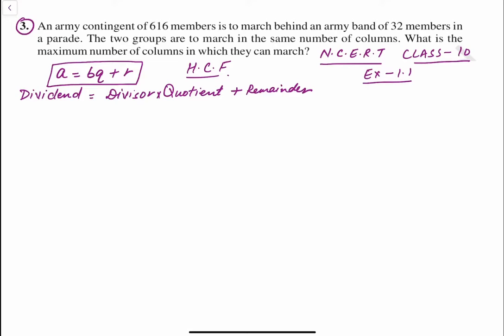In the question we have given an army contingent of 616 members, 616 is to march behind an army band of 32 members, so 32 members in a parade.